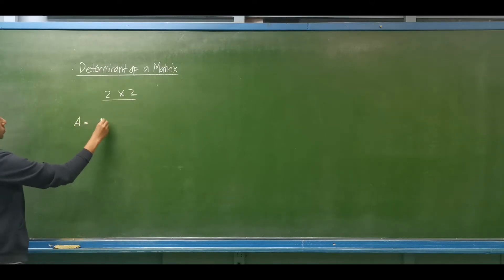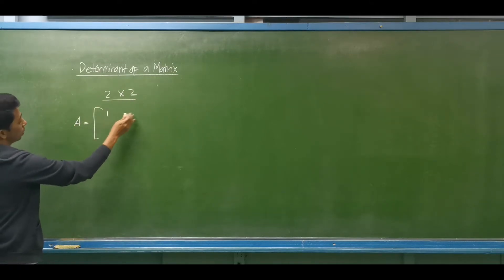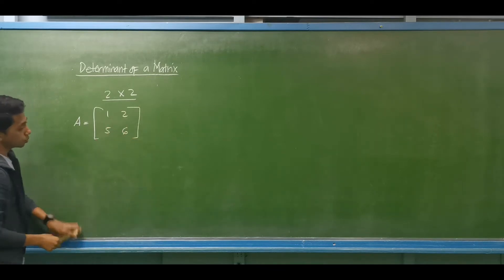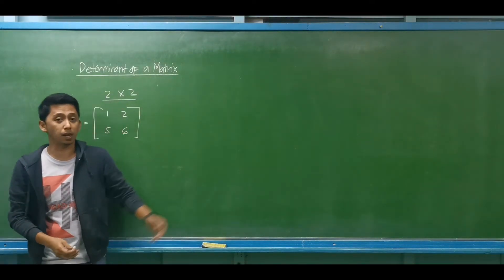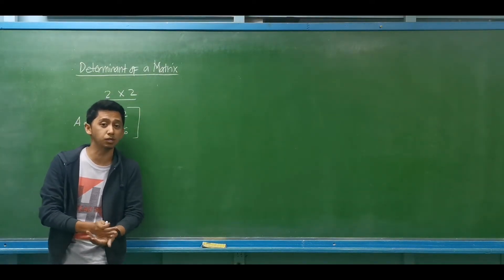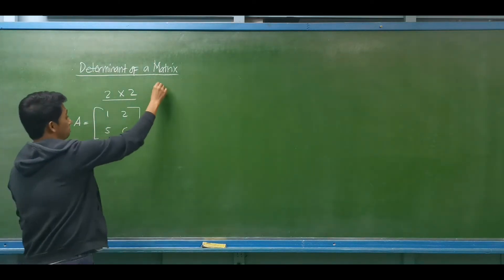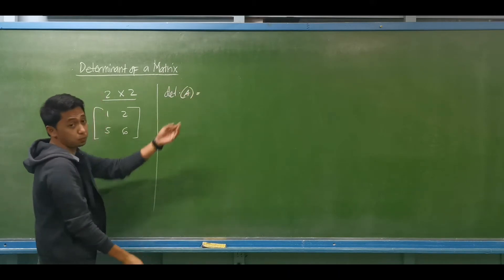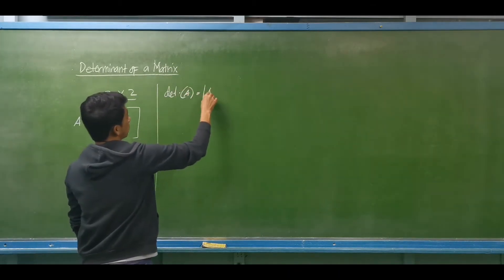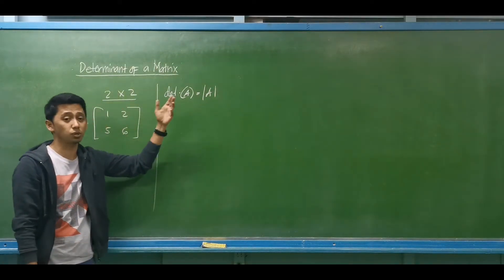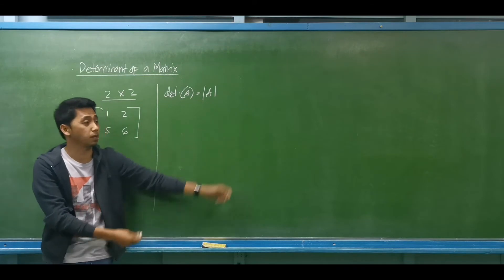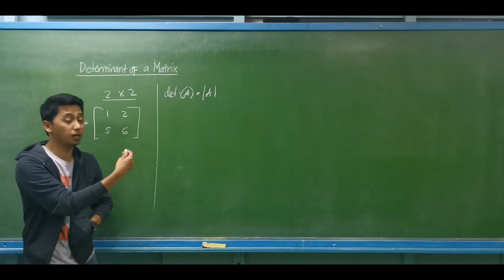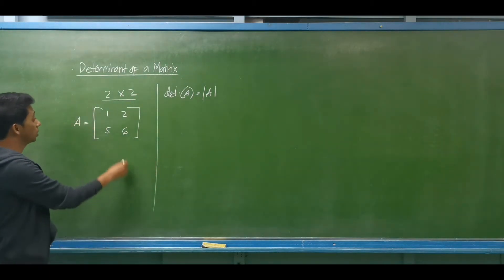For example, we have matrix A with the elements 1, 2, 5, and 6. For a 2 by 2 matrix, we can use the Laplace expansion or cofactor expansion. Let us express the determinant of matrix A using the absolute value sign. We have to choose a row or a column, then find their cofactors.